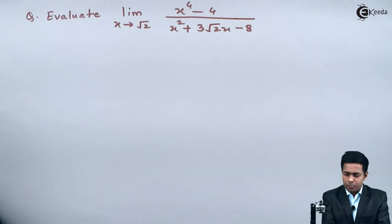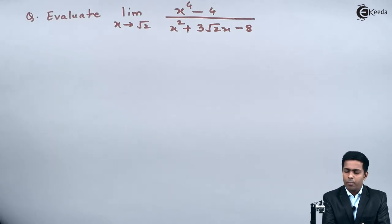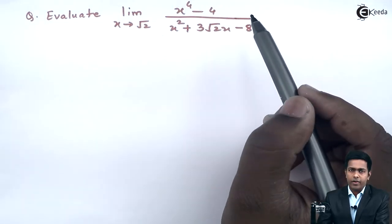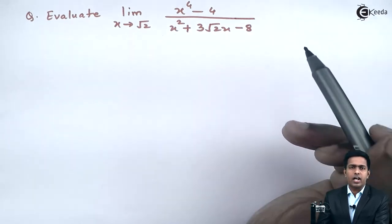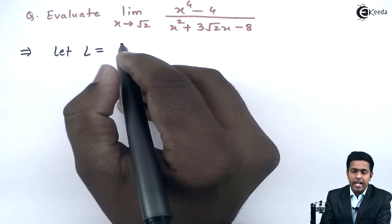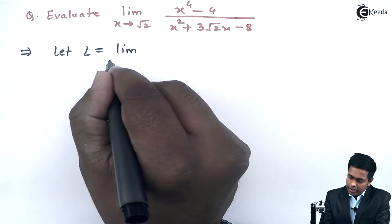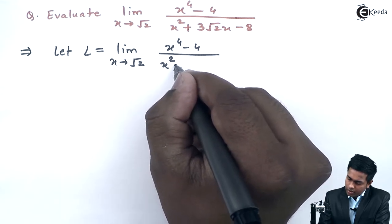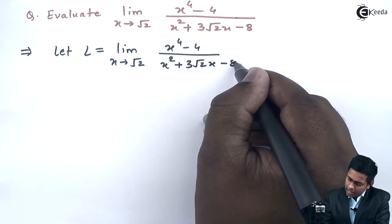Hello everyone. Here in this problem we have to evaluate the limit as x tends to root 2 of x raised to 4 minus 4, all divided by x squared plus 3 root 2 x minus 8.